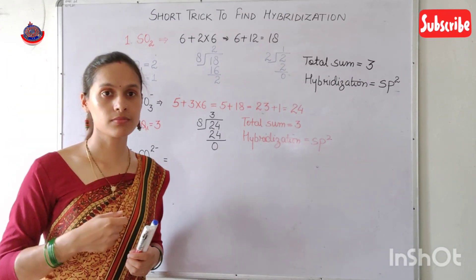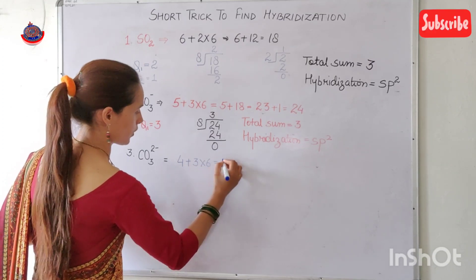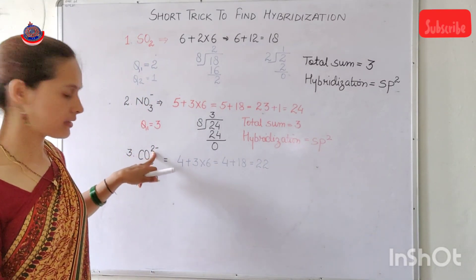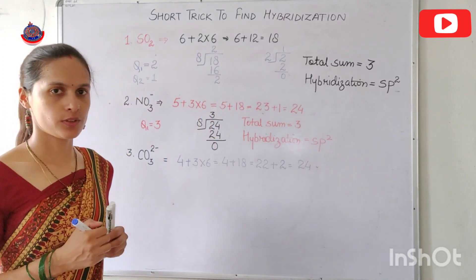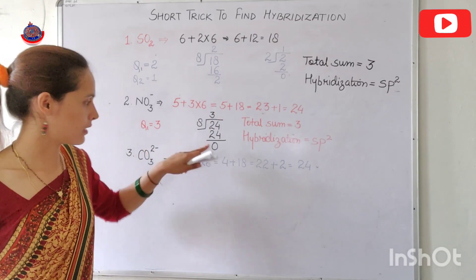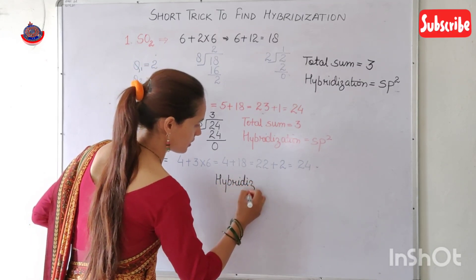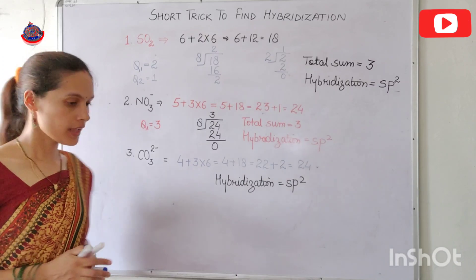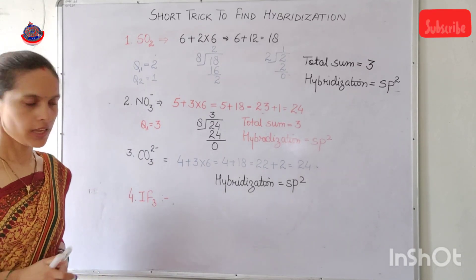Third example: CO₃²⁻. Step 1: carbon has 4 valence electrons, oxygen has 6. Total = 4 + 3×6 = 4 + 18 = 22. It is a 2⁻ anion, so add 2: 22 + 2 = 24. Divide 24 by 8: quotient = 3, remainder = 0. Total sum = 3. Hybridization is sp².